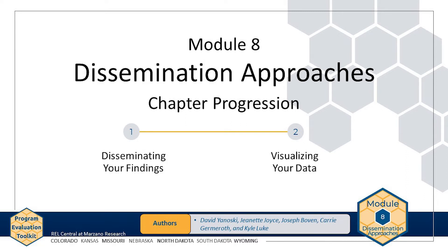Chapter 1 provides a framework for planning dissemination activities. Chapter 2 covers the basics of data visualization, or displaying data in a visual form. Refer to the Resources page of the website for worksheets, templates, and other resources to help you develop a dissemination plan and data visualizations. Throughout this module, you will be directed to specific resources related to dissemination and data visualization.